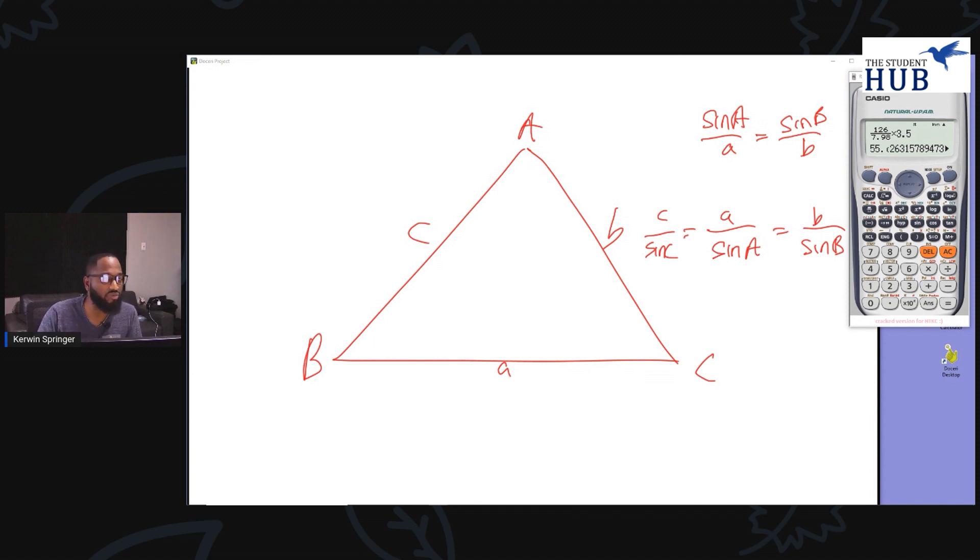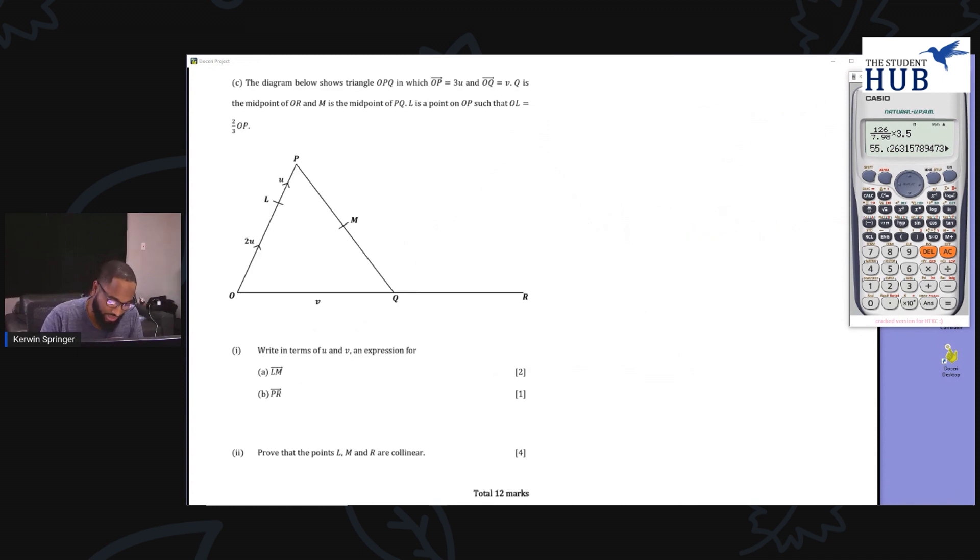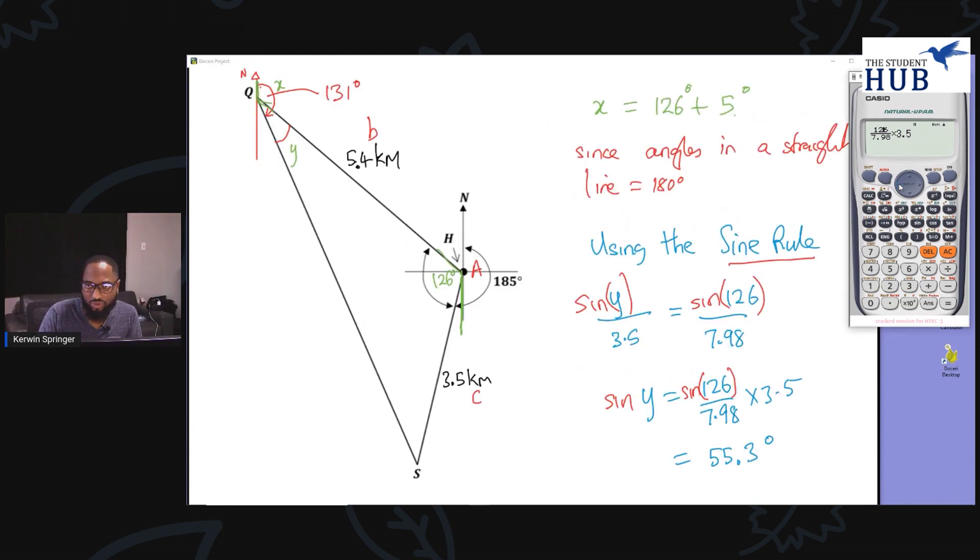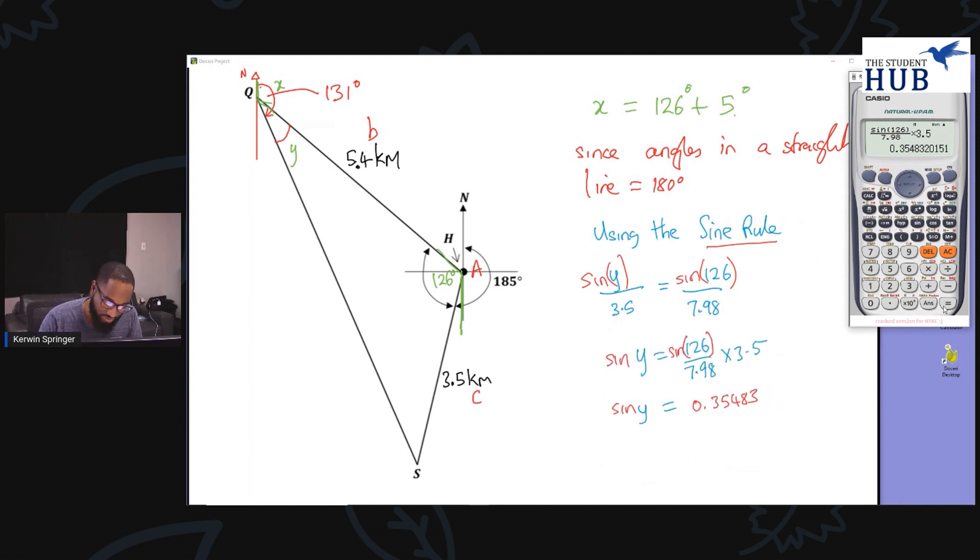In this case, I actually want the sine of 126. Make sure I'm in degrees still. This is 0.35483, I'll go to a fair deal of significance here. This is the sine of y. If I've reached here and I'm trying to figure out what y is, I need to do the inverse. y = sin⁻¹(0.35483). Sin inverse of answer, Shift, sin inverse of the answer we just got.